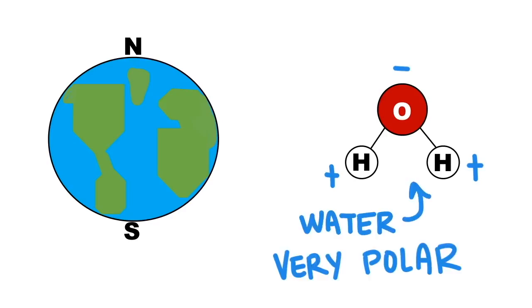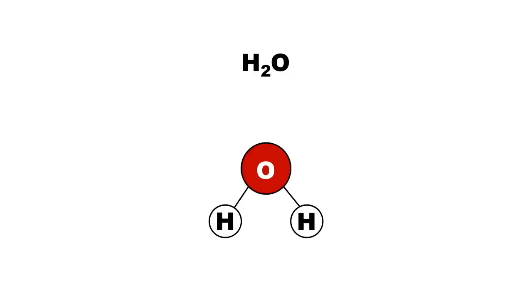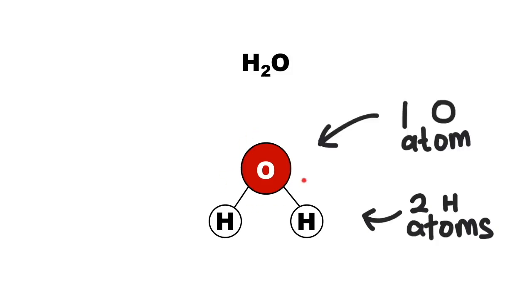For now, just know that water is a very polar molecule. Most people are familiar with the chemical formula for water, H2O. It has two hydrogen atoms and one oxygen atom, and this is what the water molecule looks like. The two hydrogen atoms have positive charges, and the oxygen atom has a negative charge. It's polar.